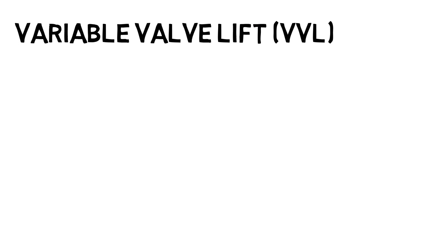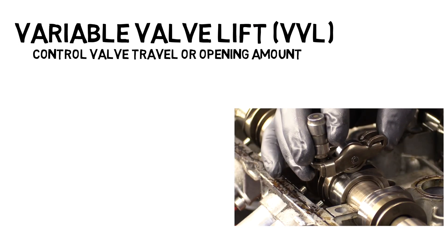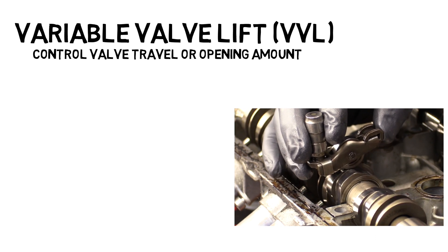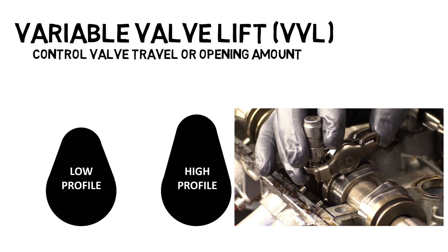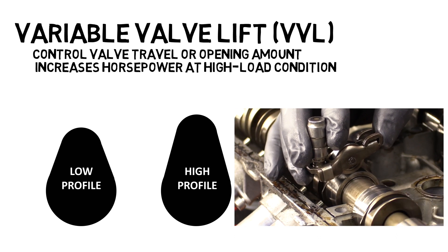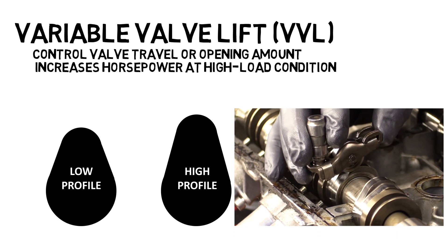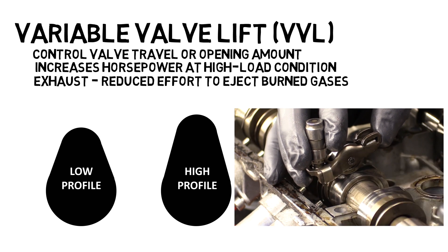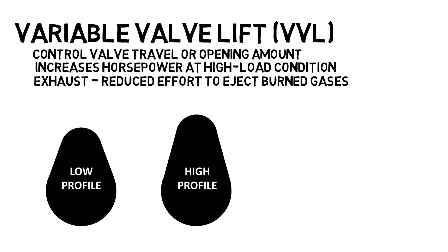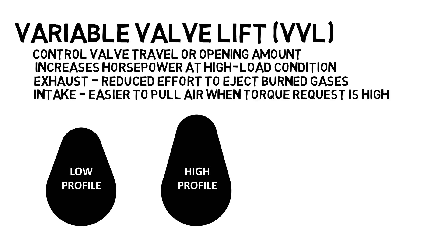Variable valve lift, or VVL, is used to control the valve travel or opening. This is achieved by changing between lobes of different heights and is almost exclusively used for increasing horsepower at high load conditions. The advantage of opening the exhaust valve more is reduced effort to eject the burned gases out of the cylinder, whereas opening the intake valve further makes it easier to pull extra air when the torque request is high.